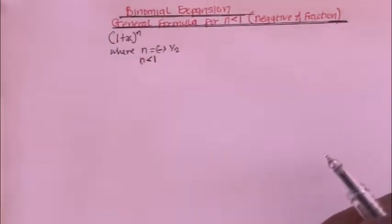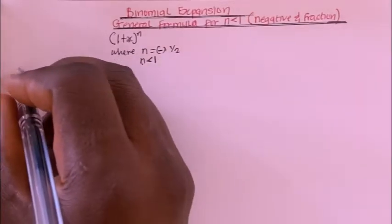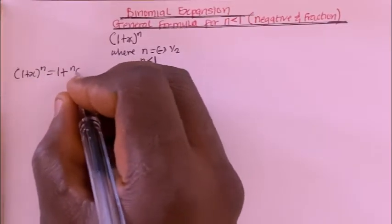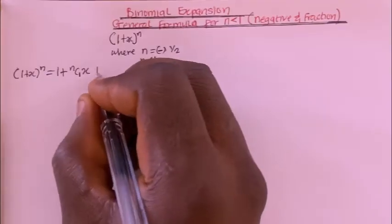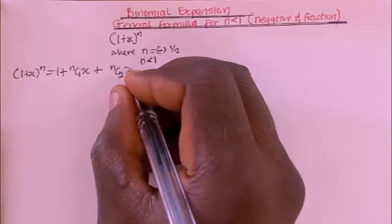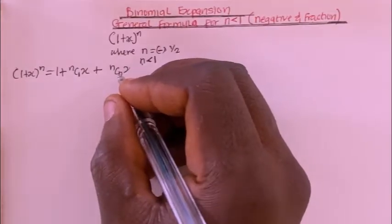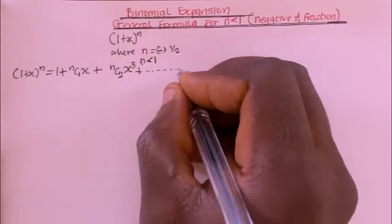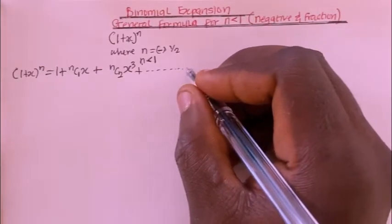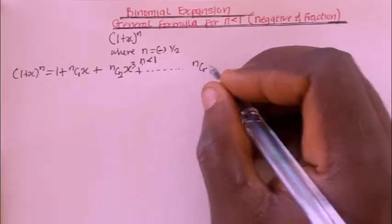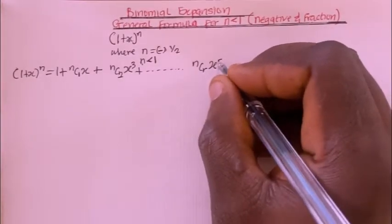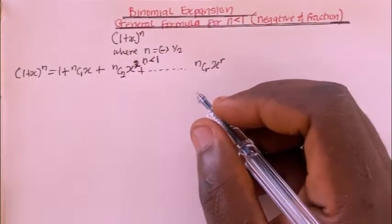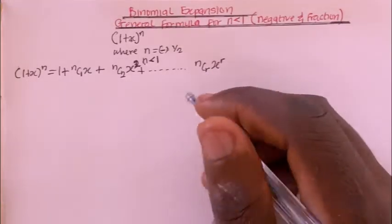So the expression is: whenever you have the form of (1 + x)^n, it equals 1 plus nC1 times x, plus nC2 times x squared, plus other terms, plus nCr times x to the power of r.